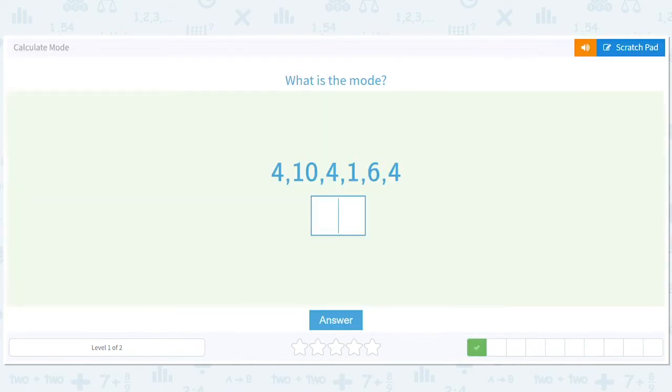Okay, what shows up the most? It just pops out at us. Four, four, four. So it doesn't matter that there are three fours. The mode is just four.